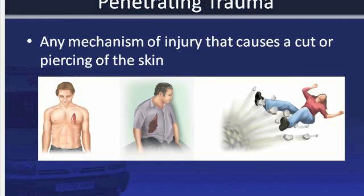Penetrating trauma is any mechanism of injury that causes a cut or piercing of the skin. Examples include gunshot wounds, stab wounds, and blast injuries. Penetrating trauma usually affects organs and tissues in the direct path of the wounding object.